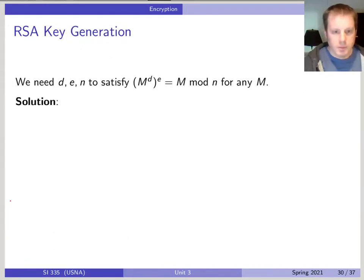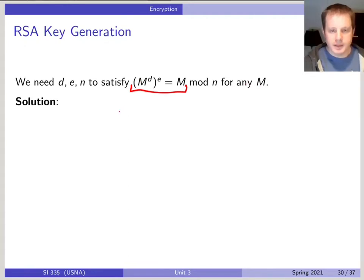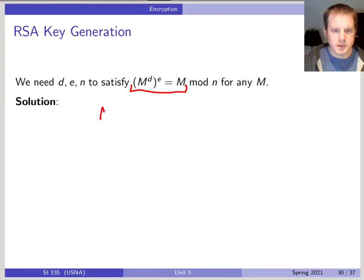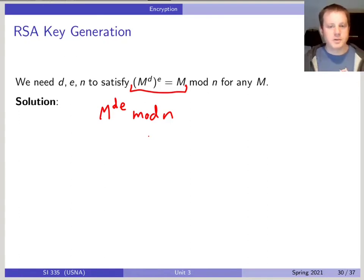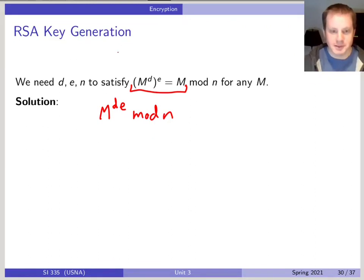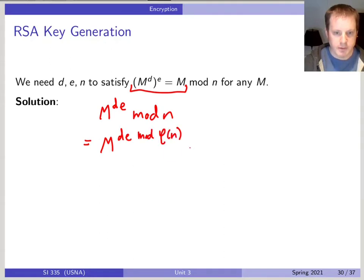Now why does this work? What we really need is that m to the e — the ciphertext — when we raise that to the private exponent d, we get back the original message m. This is the equation that needs to be satisfied no matter what the message m is. We already know the math: m to the d to the e is the same as m to the d·e mod n. When we're talking about modular exponentiation, you can always take the exponent modulo the totient of the modulus. So this equals m to the d·e mod φ(n), all mod n.